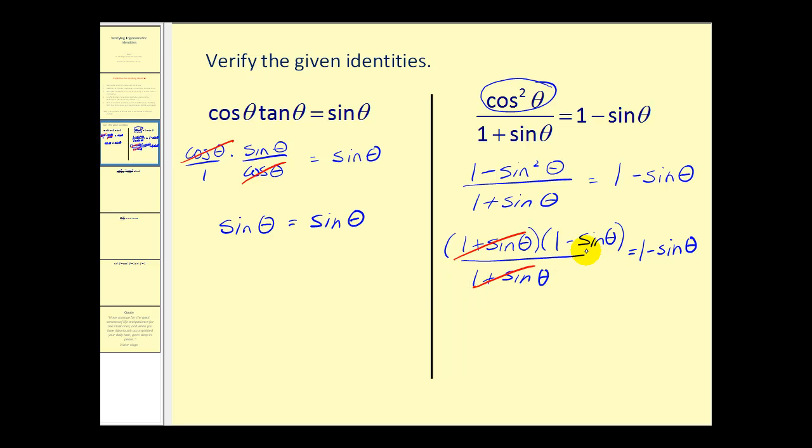We can see this fraction simplifies. We have a common factor of one plus sine theta. And we have now verified our identity. One minus sine theta equals one minus sine theta.